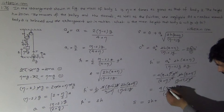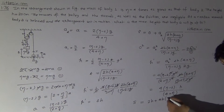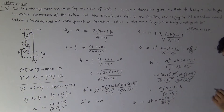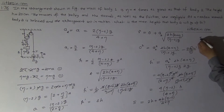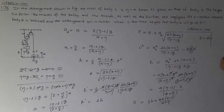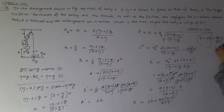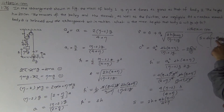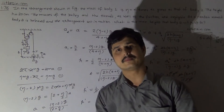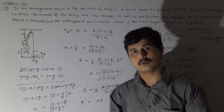The total distance S covered by block 2 is the sum of 2h and the extra height h'. So S equals 2h plus 4h(eta minus 2)/(4 plus eta). Factoring out 2h: S equals 2h times [1 plus 2(eta minus 2)/(eta plus 3)]. This is the total distance travelled by block 2.